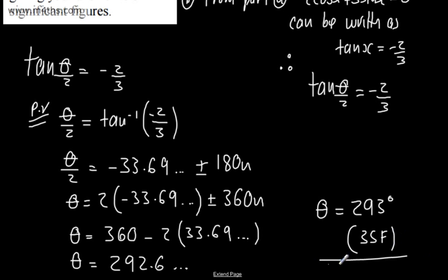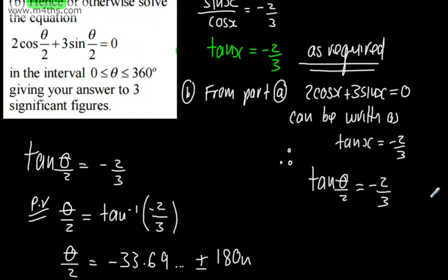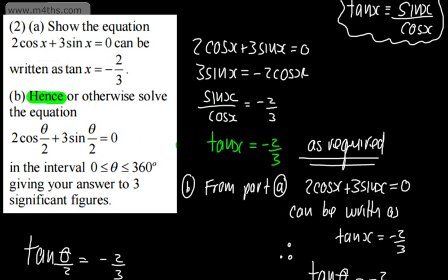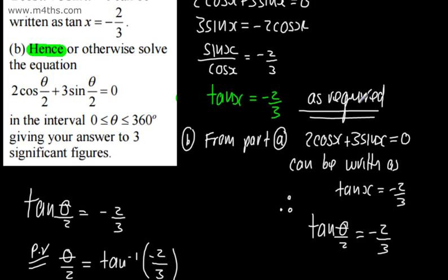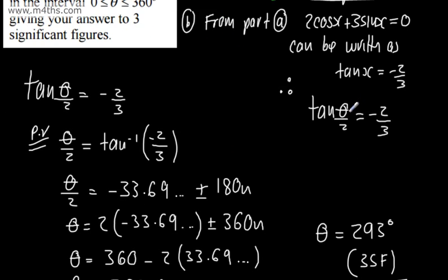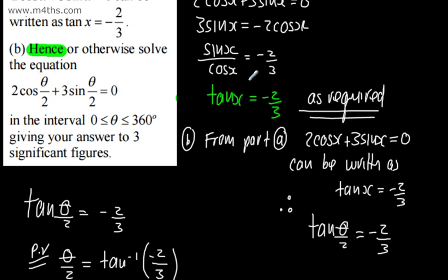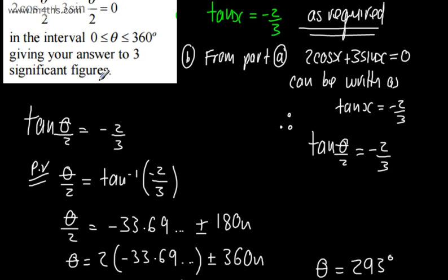That's done — we've simply used part A as stated and solved the second equation by swapping x for θ/2, then solving in the given interval.